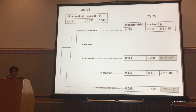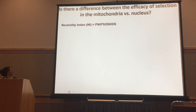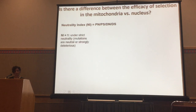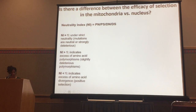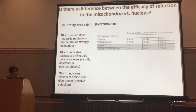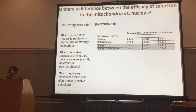We also looked at the neutrality index, commonly used to assess the efficacy of selection, determined by the ratio of polymorphisms to fixed differences at non-synonymous versus synonymous sites. The neutrality index equals 1 under strict neutrality; greater than 1 indicates slightly deleterious polymorphisms; less than 1 usually indicates positive selection. We did this for three species — one lacked enough polymorphism data. Consistent with earlier results, tetraurelia and caudatum show no significant difference in neutrality index values, but sexaurelia shows a significant difference.